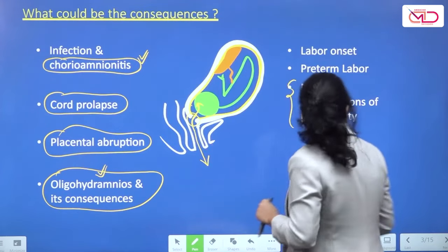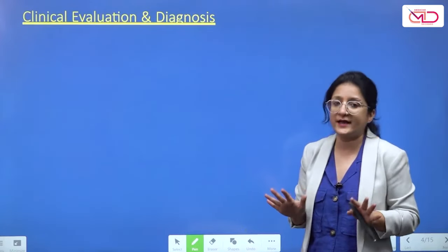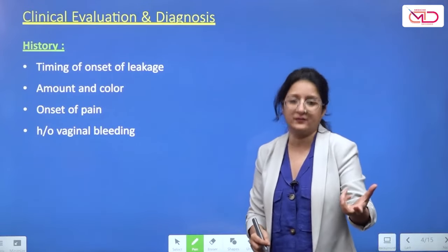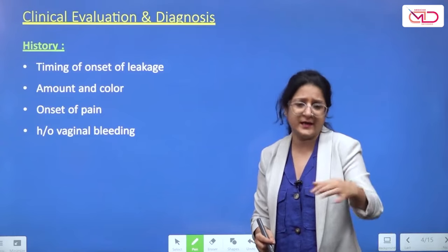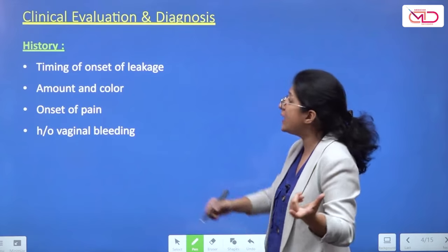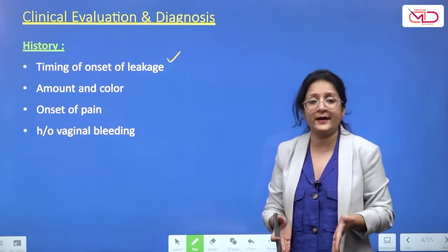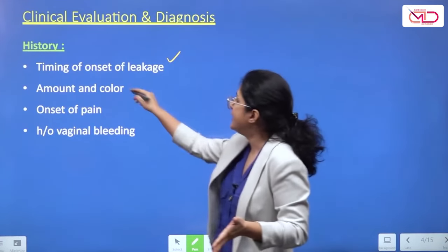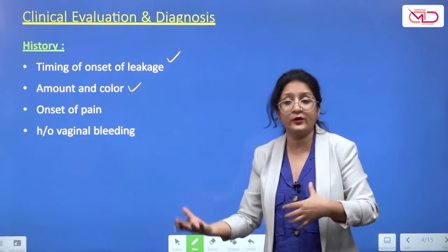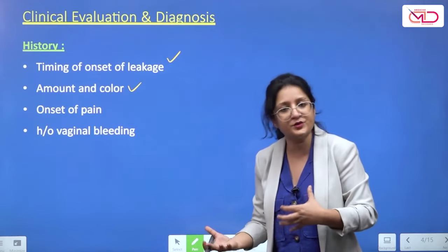Let's talk about clinical evaluation and diagnosis. When a woman presents with a history of leaking, you need to ask about the timing of onset, how long she has been leaking, the amount, and the colour — greenish suggests meconium staining, blood staining raises the possibility of placental abruption, clear fluid is typical of amniotic fluid.